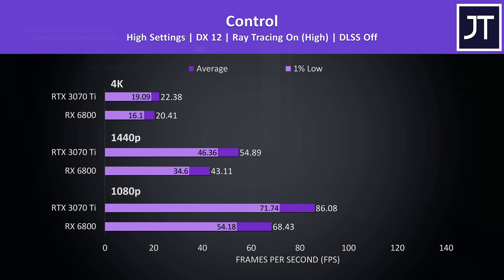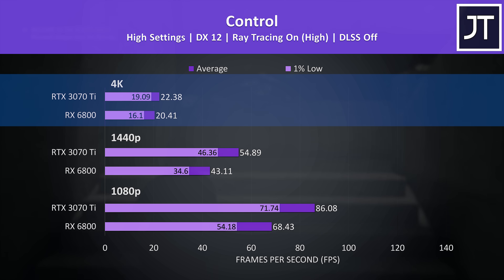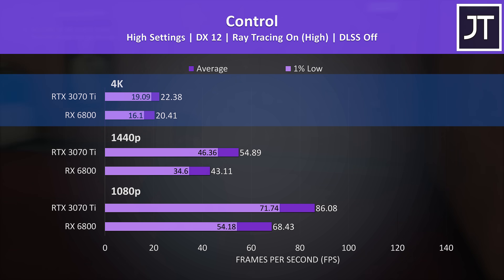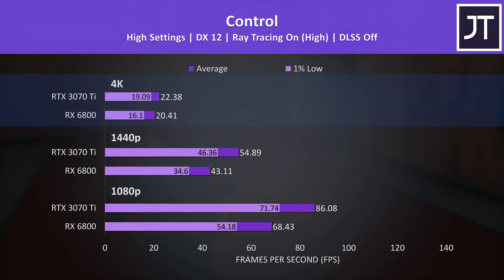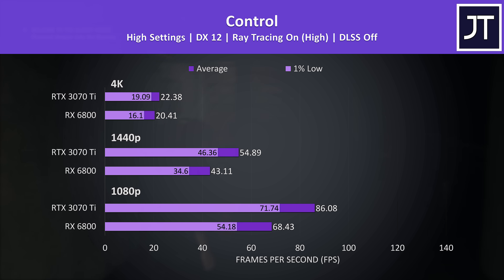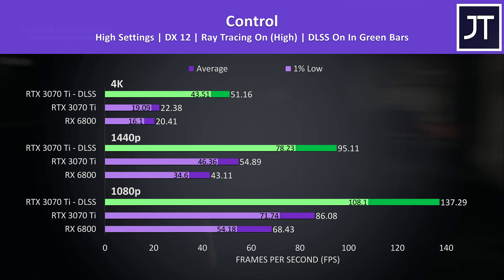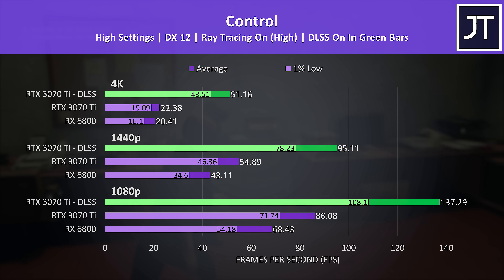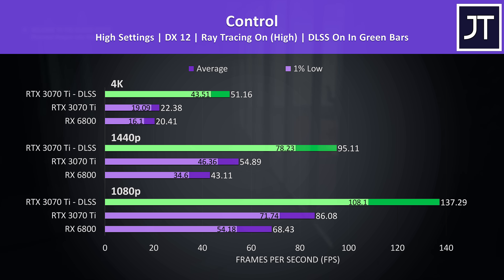There's a much bigger difference when it comes to ray tracing. The 3070 Ti is now 26% ahead of the 6800 at 1080p, 27% ahead at 1440p, and about 10% ahead at 4K — though realistically nobody would be playing at 4K with ray tracing at 20 FPS. Nvidia clearly has the lead here, and we also have the option of DLSS which offers a further speed boost, as shown in the green bars. AMD has FSR coming soon, but you can't argue that Nvidia DLSS is more widely available today in mid 2021.